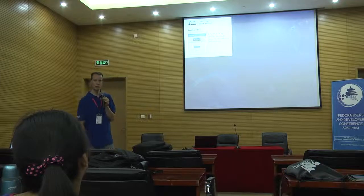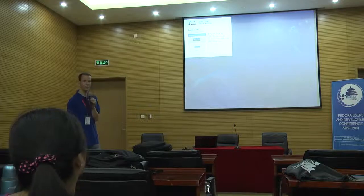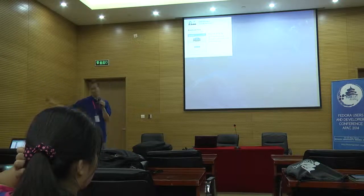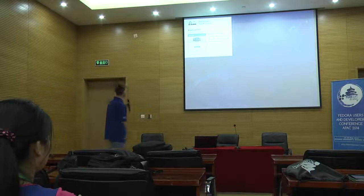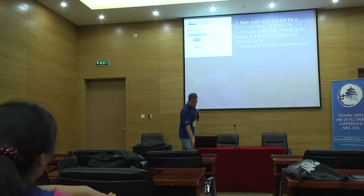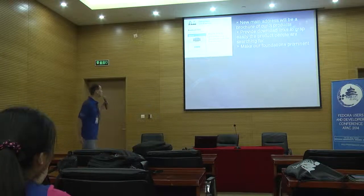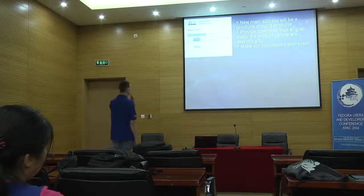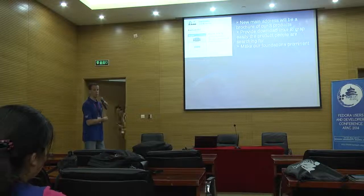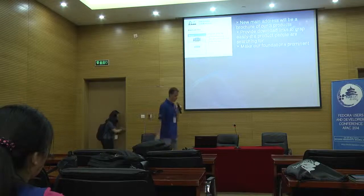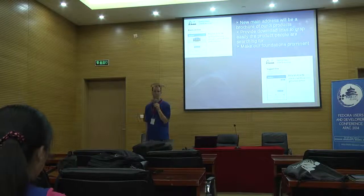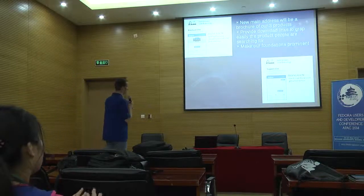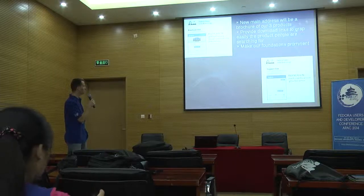The main fedoraproject.org domain page will fall away. It will redirect directly to the getfedora.org page, which will be a brochure — a clean page where we have our downloads of the three products. We will provide download links so people can easily grab the product they're searching for: Workstation, Cloud, and Server. The brochure will contain our four foundations and will be very easy to read — a few clear pieces of information, built for all people who are looking for Fedora. The inspiration is from Stack Overflow or Get Satisfaction.